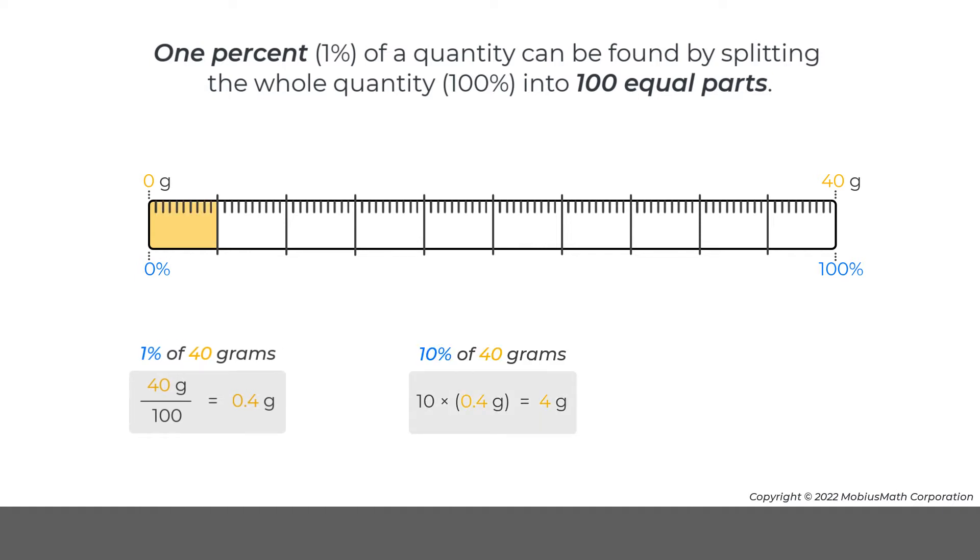Notice that 10 of these equal parts is 10%, or 4 grams, and 100 of these equal parts is 100%, or the whole 40 gram cheese stick.